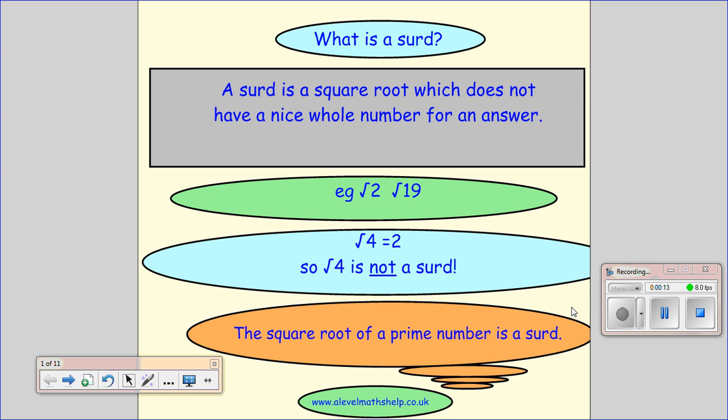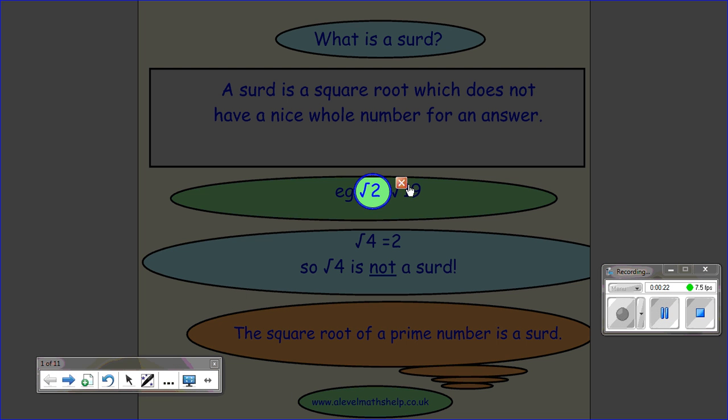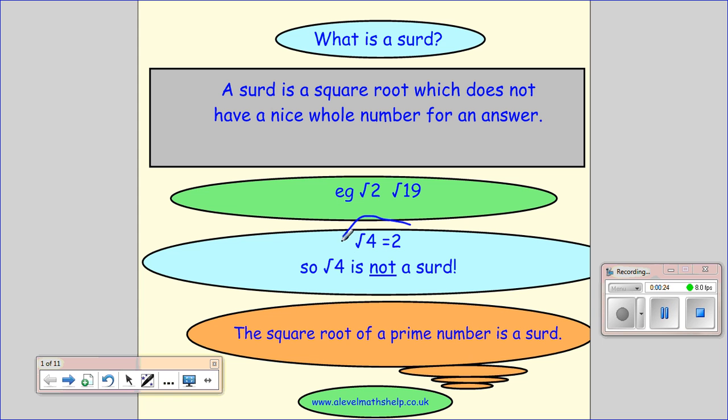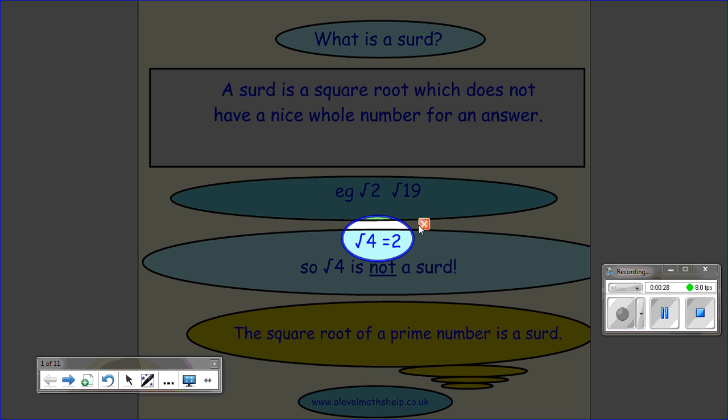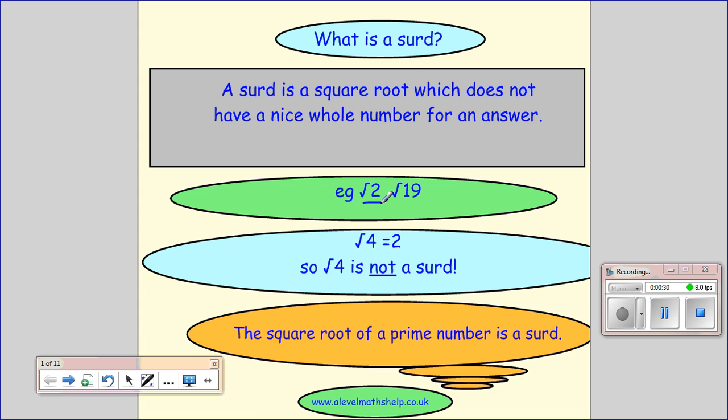So we start with what is a surd. A surd is a square root which doesn't have a nice whole number answer. So if I have root 2, nothing nice comes out of that. Whereas if I have the square root of 4, I get the nice whole number 2. So root 4 isn't a surd and root 2 is a surd.